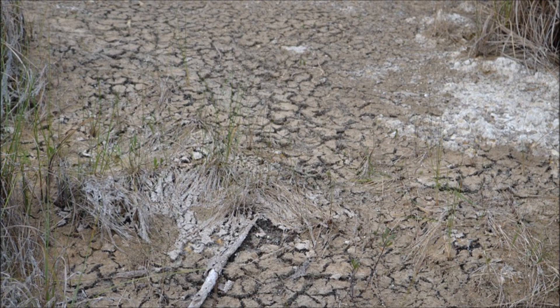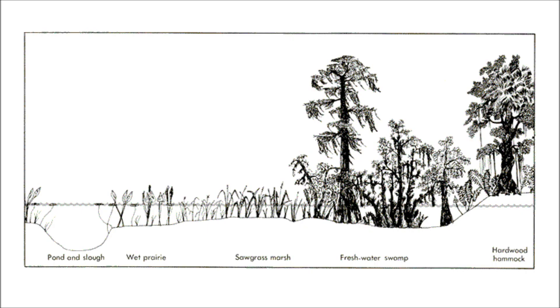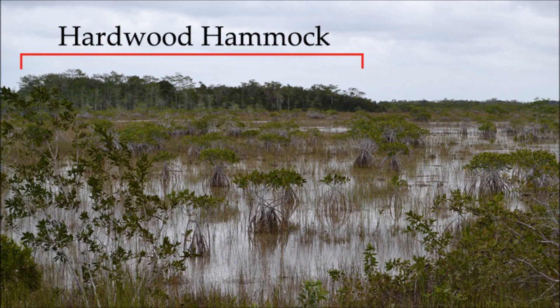That limestone provides habitat for types of plants that cannot survive with their roots underwater. There are five different types of ecosystems in the Everglades, characterized by their height off of water level and by the type of vegetation that grows there. The first type of ecosystem is the hardwood hammock. Hardwood hammocks are islands of dirt and sediments centimeters higher than water level, and their vegetation is made up of trees, palmettos, shrubs, bushes, moss, and grass.